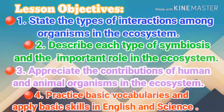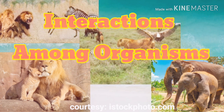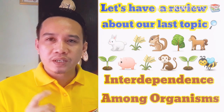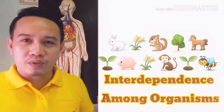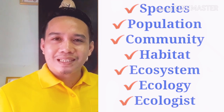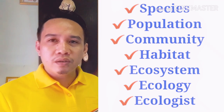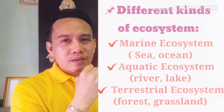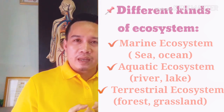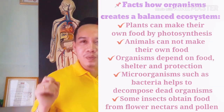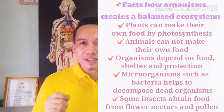For this video, we are going to talk about the interactions between organisms. Before we move to our next lesson, we are going to have a short review regarding what you have learned with our first topic on interdependence of living organisms. Key terms include species, population, community, habitat, ecosystem, ecology, and ecologist. We also discussed the different kinds of ecosystems — marine, aquatic, and terrestrial — which are habitats where organisms live and grow together.